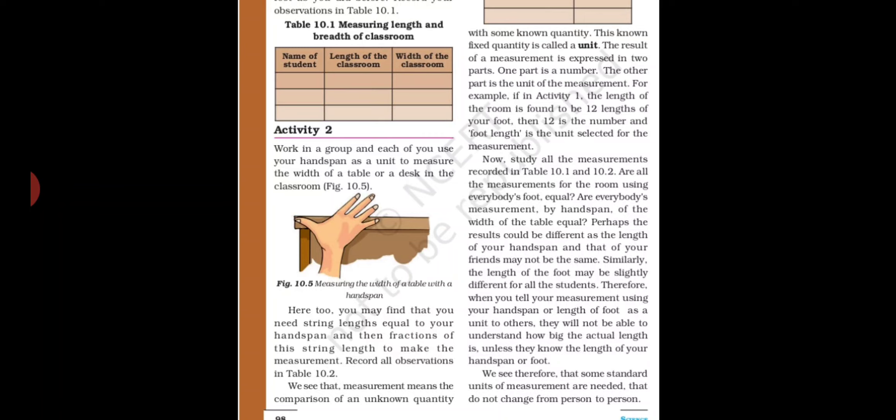For example, if a line's length is 30 inches — 30 is the number and inches is the unit. The fixed quantity you get after comparison is called a unit. In Activity 1, if the length of the room is found to be 12 foot lengths, then 12 is the number and foot length is the unit selected for the measurement.